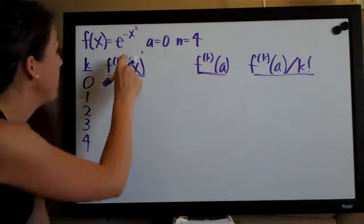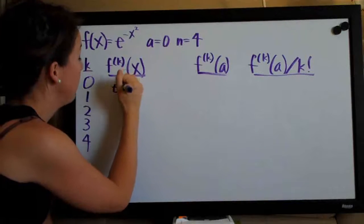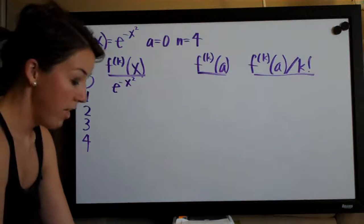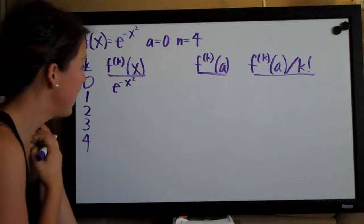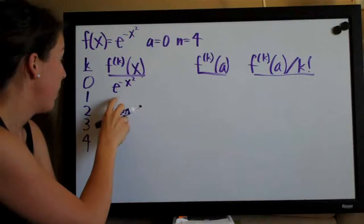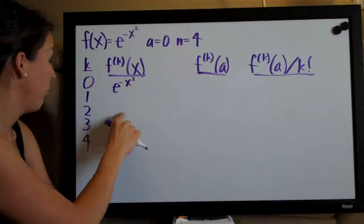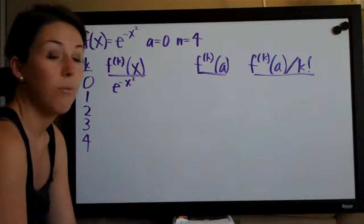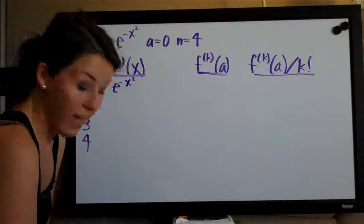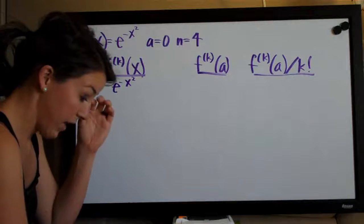The original function always goes in this first row: e to the negative x squared. That always goes in the first row. Then what we're going to do is take the derivative of this function and put the derivative in the second row next to the one, then take the derivative again for row two, and again for row three. So let's go ahead and do that now.